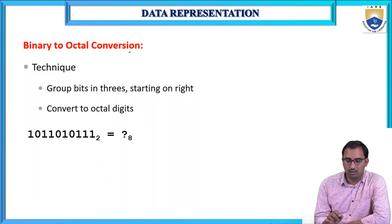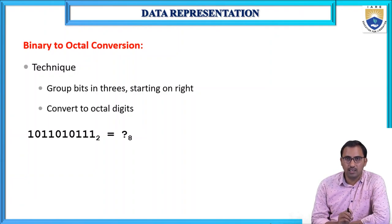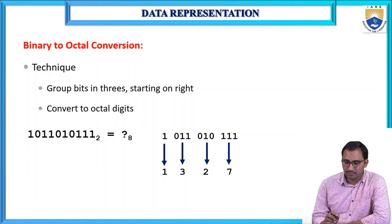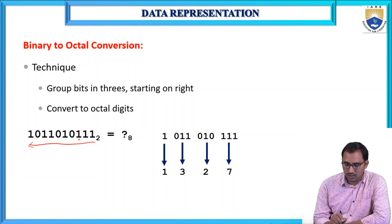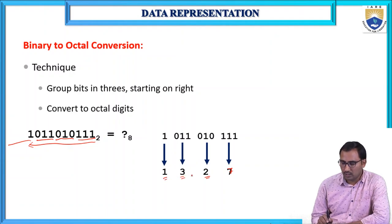For binary to octal conversion, the technique is to group bits in 3 starting from the right and convert each group to an octal digit. For example, grouping a binary number from the right in groups of 3: 111 = 7, 010 = 2, 011 = 3, and the remaining 1 becomes 1. So the octal equivalent is 1327.